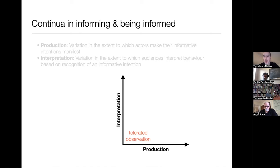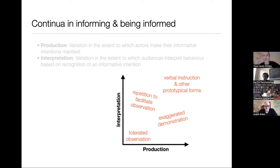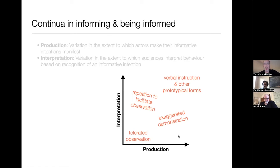Another thing you see in the ethnography of teaching is tolerated observation, where the master does nothing except what they normally do but allows themselves to be watched. This is quite common in apprenticeship situations — the apprentice just watches the master go about their business. Go to the original literature and you'll find masses of different varieties of ways of teaching, learning, and information flow. There's just a few of them here, but we could take any particular instance and debate for a long time where exactly to place it in the framework given this particular learner. The point being: there is this diversity, and by thinking about these two continua, we can start to make sense of it in a unified way rather than treating each case on its own isolated terms.